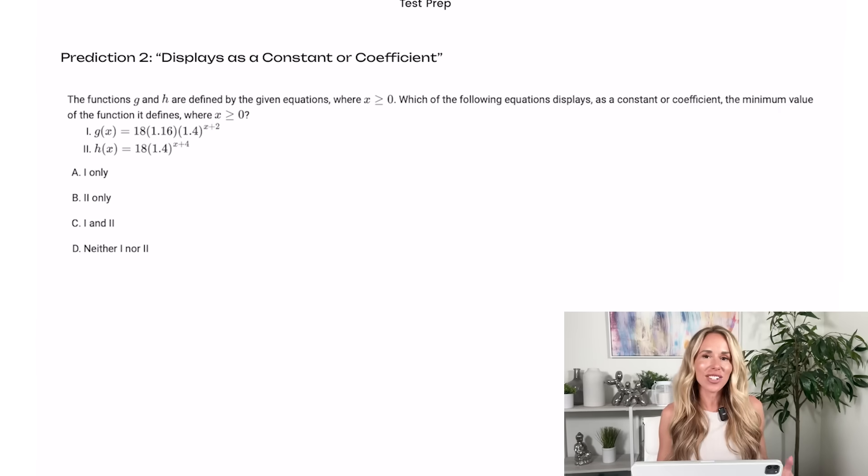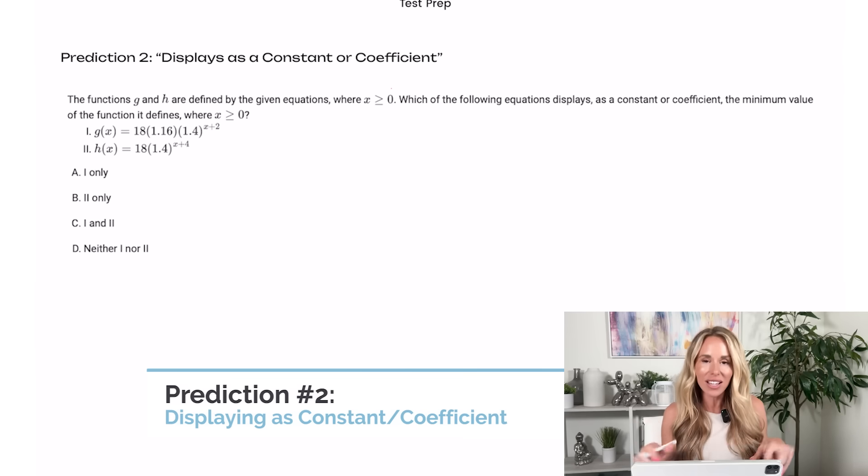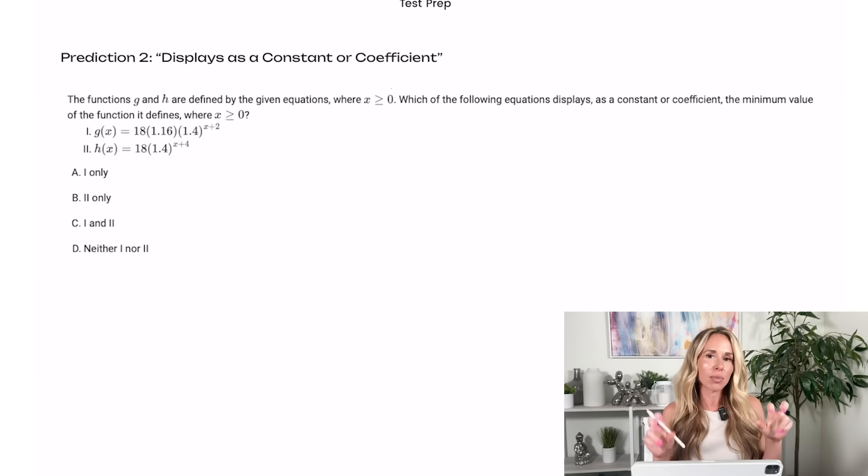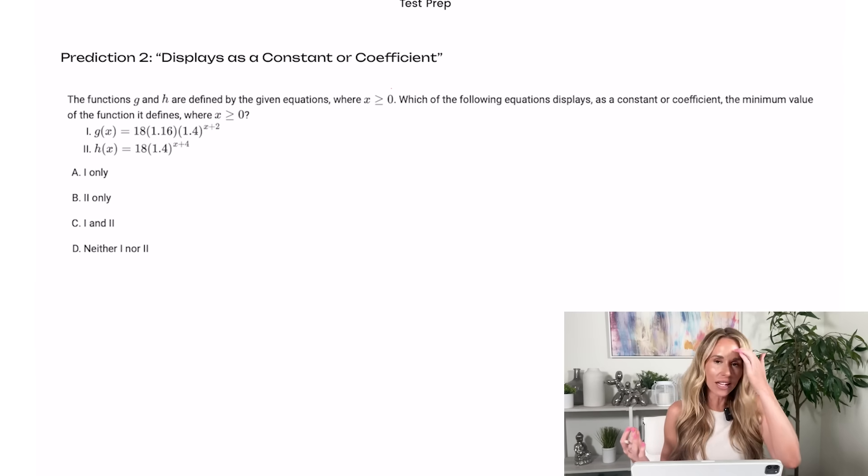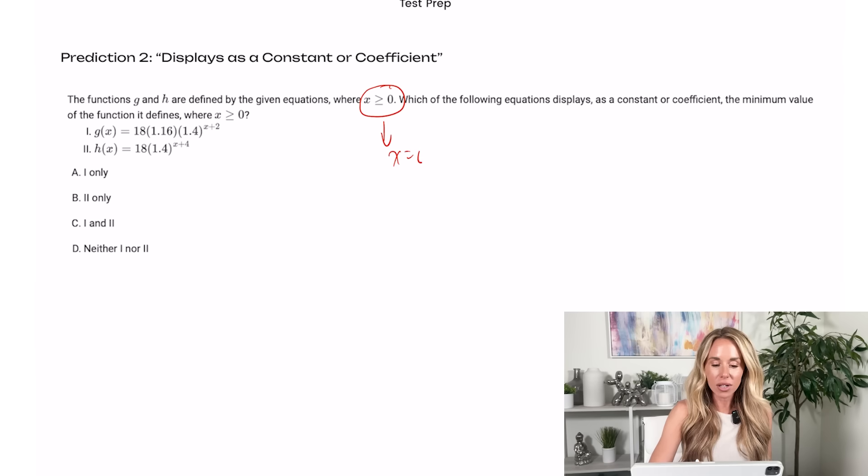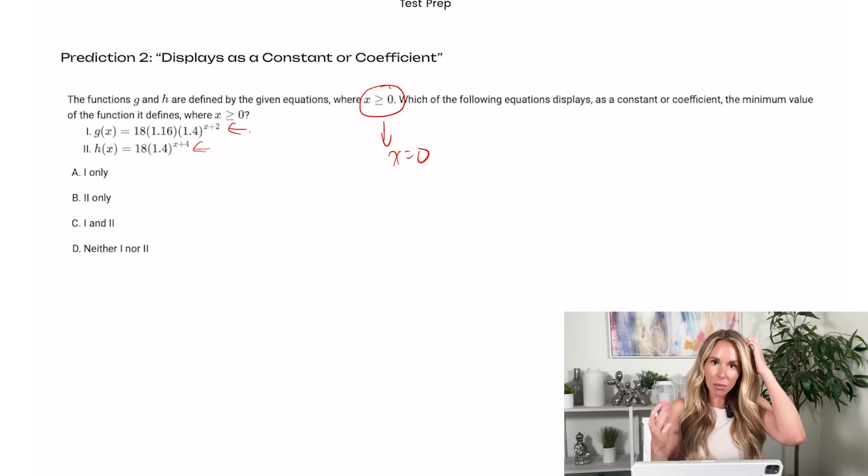All right, my second prediction is a math prediction. I think that they're going to ask you about displaying as a constant or coefficient. Sometimes they might word it as displayed as a base or coefficient. And that's just basically fancy SAT speak for saying, hey, what answer has a number in the original equation that's still visible when you get the answer? So essentially, when they talk about x being greater than or equal to zero, what you're going to do is you're going to put in zero for x into the answers. And then you're going to see if it spits out a number that's already visible in the original equation.